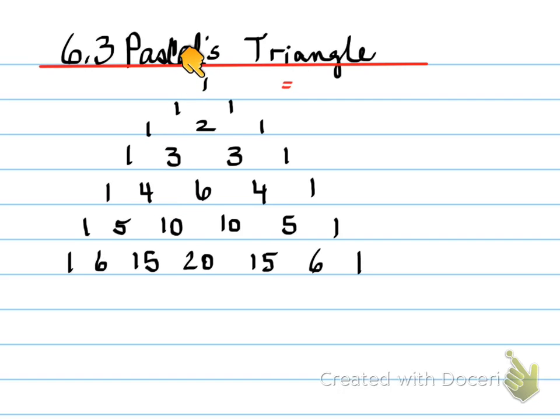So when we create Pascal's triangle, this is known as row 0. It has a sum of 1. And if we add all the numbers in each of the rows,